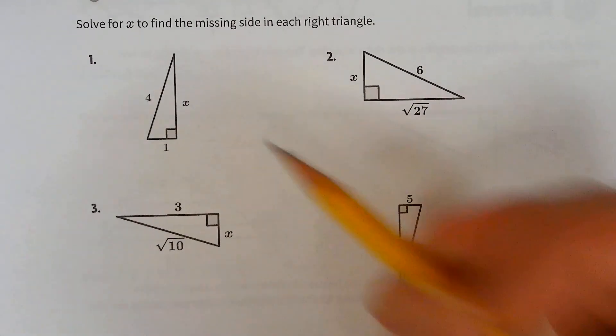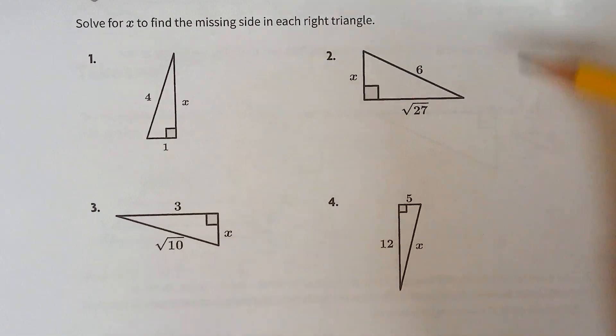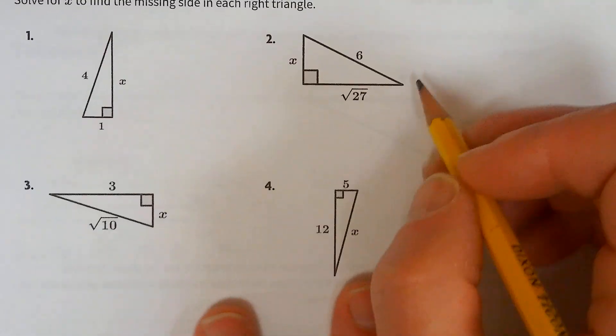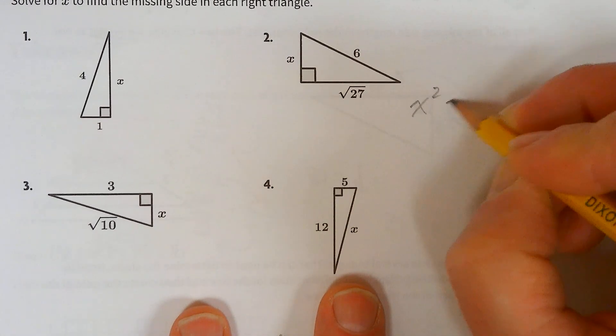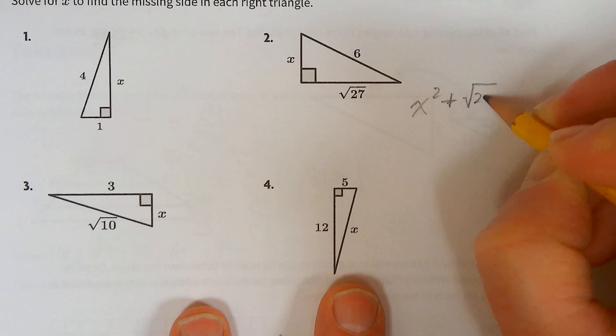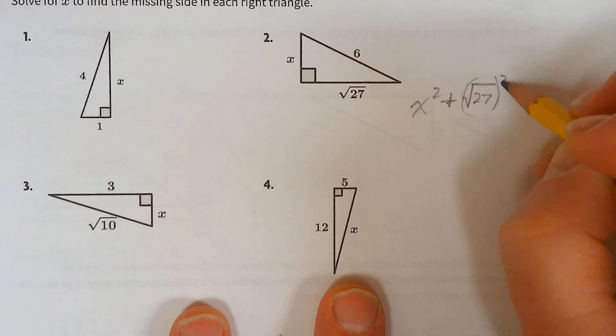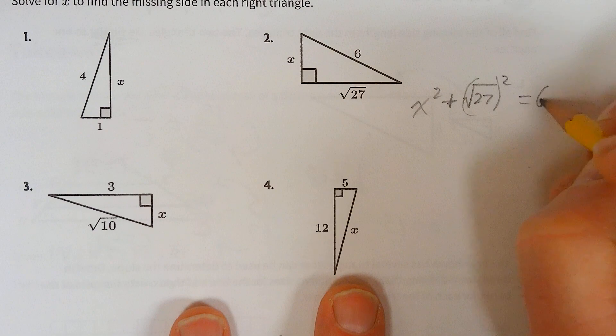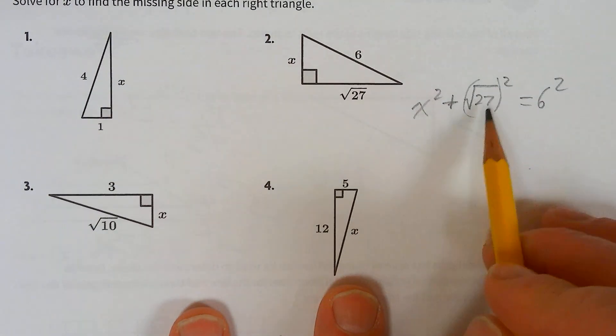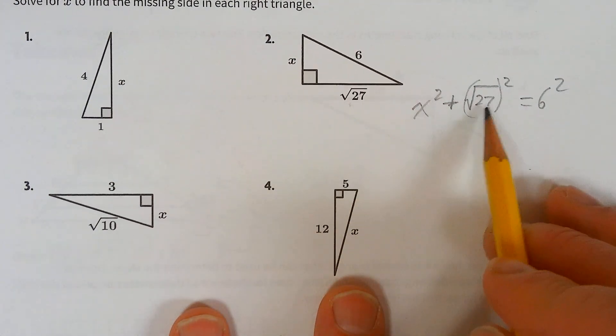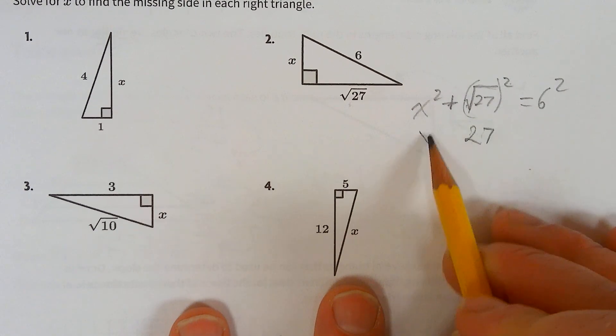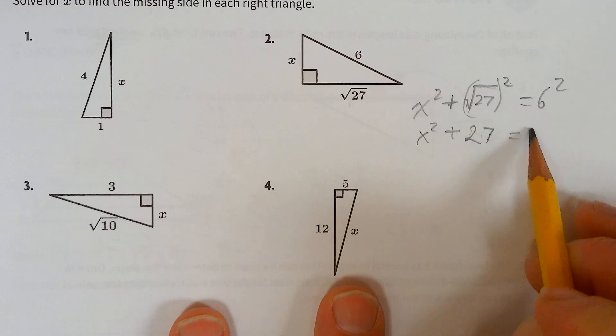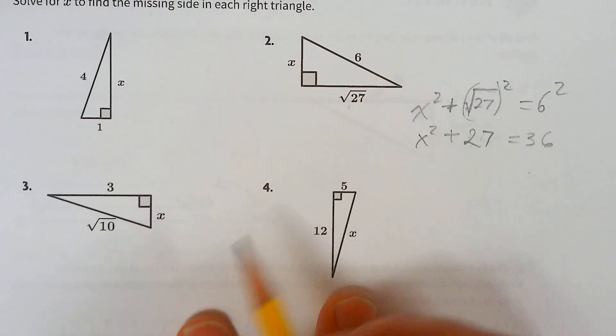And now the homework begins. Looks like some Pythagorean theorem. Remember, it looks like it's going to make the problem harder, but it actually makes it easier because the square root of 27 squared is 27. Subtract, square root, you're done.